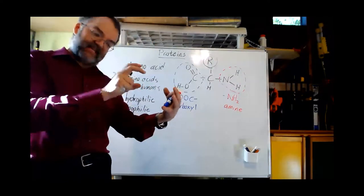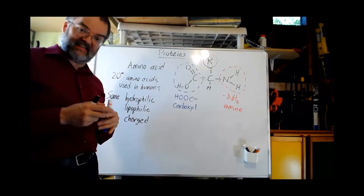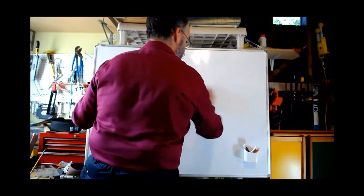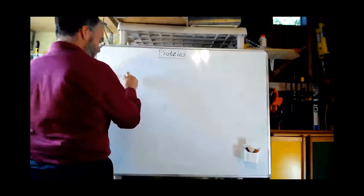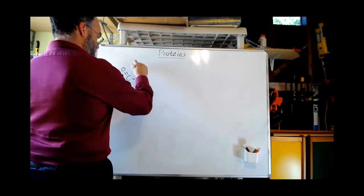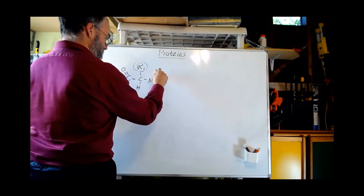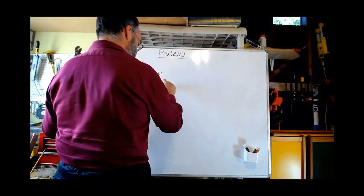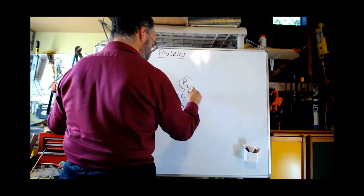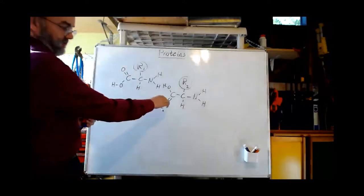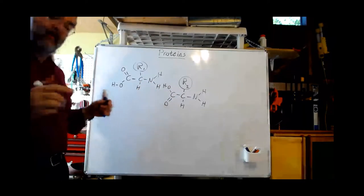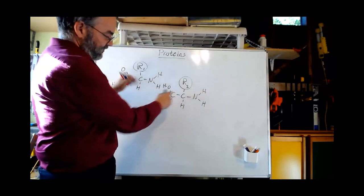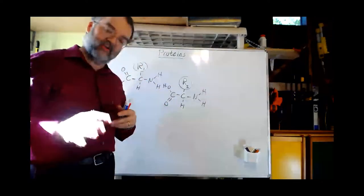Just like those plastic beads can snap together, different amino acids can combine and stick together, forming what we call a peptide bond. To show how that works, let's draw two amino acids. One has its carboxyl group, the other has its amine group. If we can get them to approach each other with the amine group of one and the carboxyl group of another in just the right arrangement, we can get something interesting to happen.